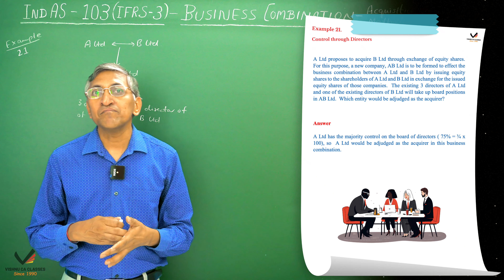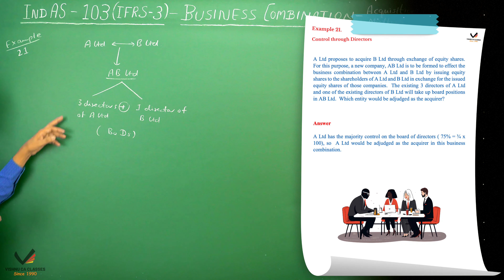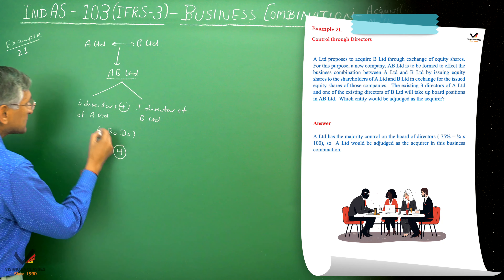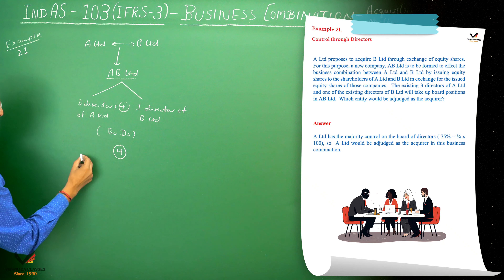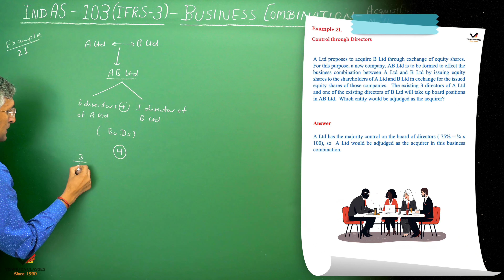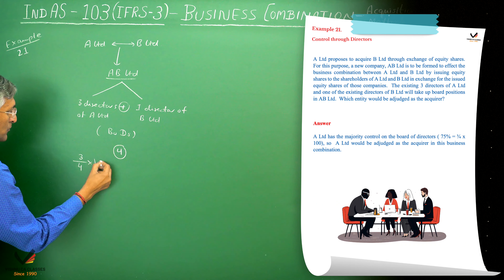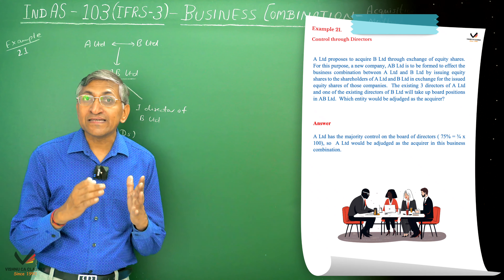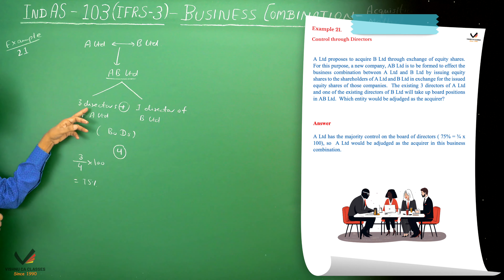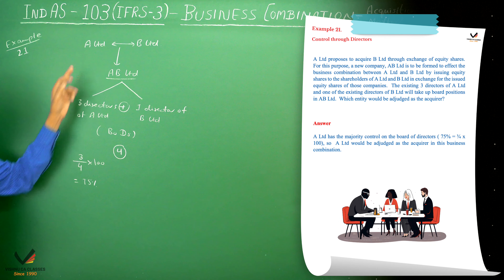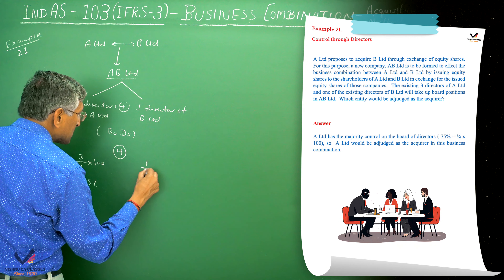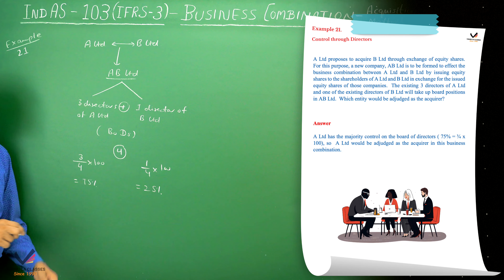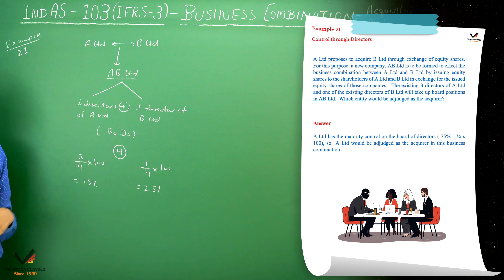Who will have control over this company? Control means we look at the directors. There are four directors total, and three directors are from A Limited. So A has 3/4 into 100, which equals 75% power to control. It means 75% of decisions will be taken by directors from A Limited, and only 25% decisions will be taken through the one director of B Limited.